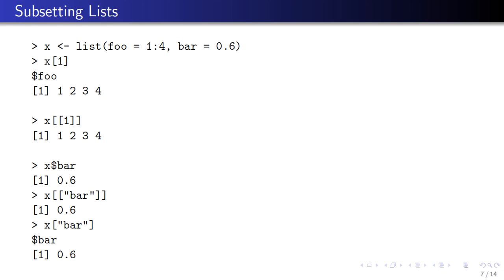Using the dollar sign — x$bar — gives me the element associated with the name 'bar', which is the single number 0.6. I can also use the double bracket with a string: x[['bar']] is the same as x$bar and gives me 0.6. If I use the single bracket with a name — x['bar'] — I get a list with the element 'bar' in it, because the single bracket always returns a list when subsetting a list. The nice thing about subsetting by name is that you don't have to remember where the element is in the list — you can just use its name.